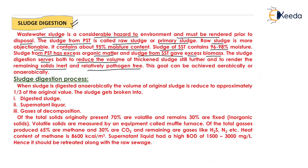When sludge is digested anaerobically, the volume of the original sludge is reduced to approximately one-third of the original value. The sludge gets broken into three parts: digested sludge (the solid part), supernatant liquid (the liquid part), and gases of decomposition which are released to the atmosphere.